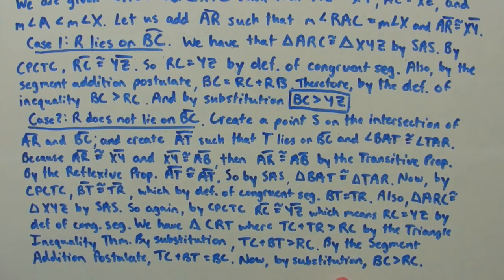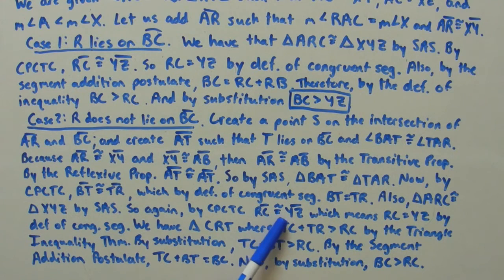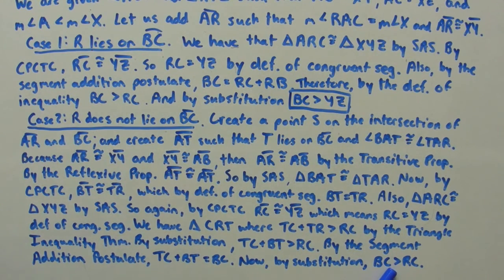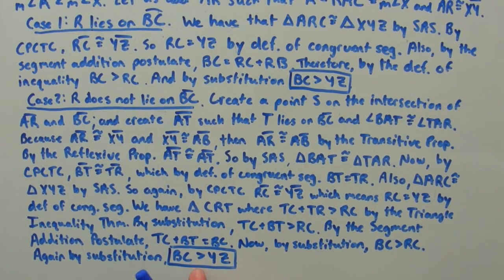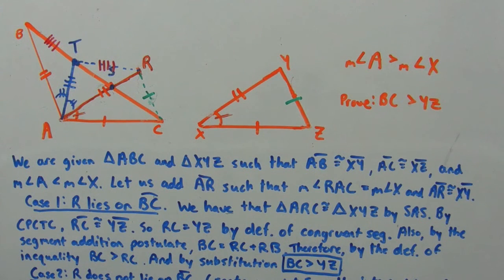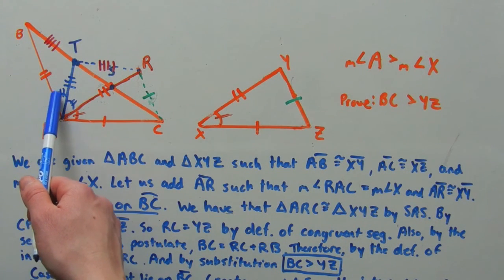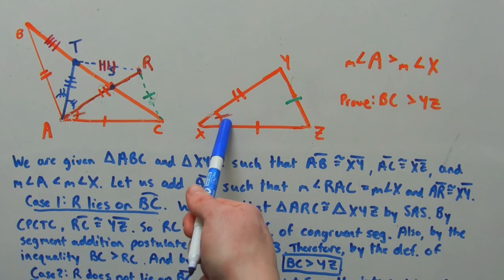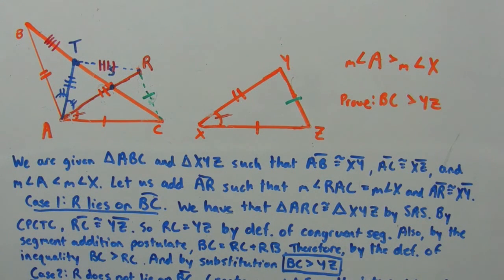So now we have that BC is greater than RC. By CPCTC we said that RC equals YZ, so substituting YZ in for RC gives us BC is greater than YZ. Since we proved that both cases are true, we have proven that if two sides of a triangle are congruent to two sides of another triangle, and the included angle of the first triangle is greater than the included angle of the second triangle, then the third side of the first triangle is greater than the third side of the second triangle.